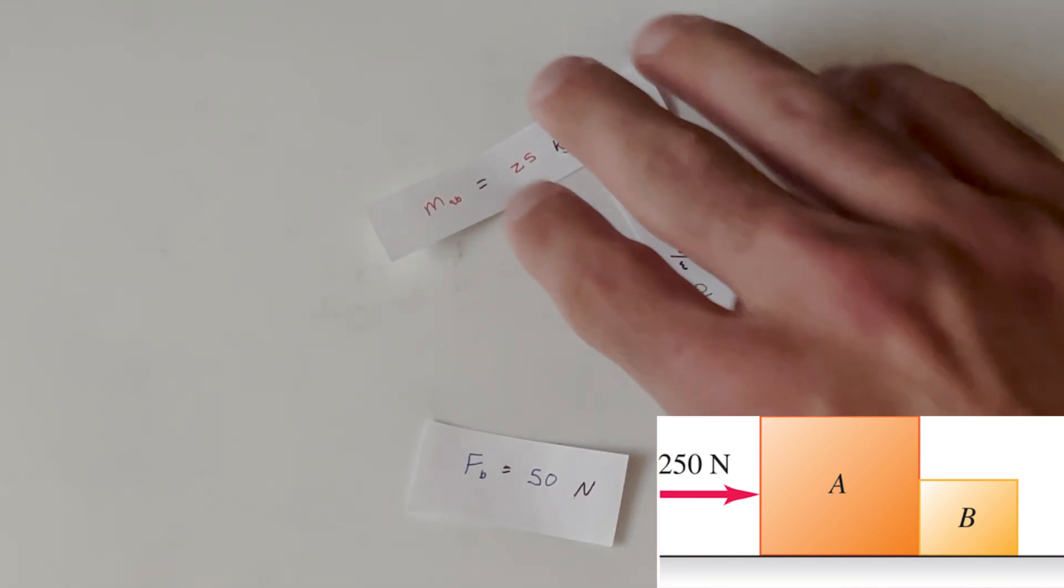So we can get rid of those. And, yeah, that's our final answer. Force on B exerted by A is 50 newtons. So thanks for watching. If you have any more physics questions, feel free to ask in the comments. And check out my playlist. See you in the next video. Peace.